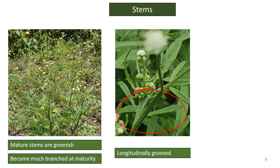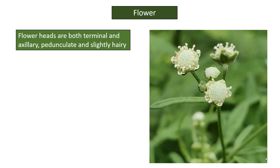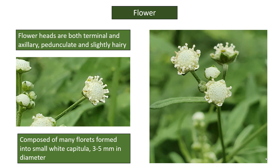Stems are longitudinally grooved and covered in small stiff hairs. Flower heads are both terminal and axillary, pedunculate, and slightly hairy. They are composed of many florets formed into small white capitula, three to five millimeters in diameter.